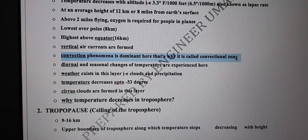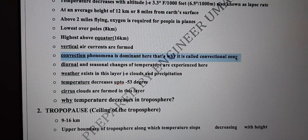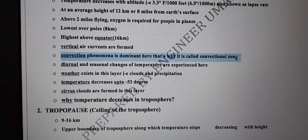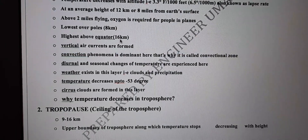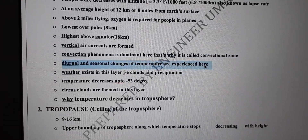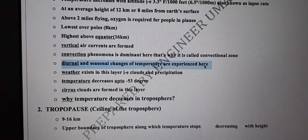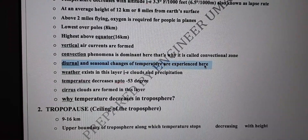The convection phenomenon occurs inside this layer, that's why it is called the convection zone. Here, convection currents form due to temperature differences — warm air rises and cold air takes its place, generating winds. This phenomenon is called convection. Diurnal and seasonal changes of temperature are also experienced here — meaning day-to-night temperature differences.